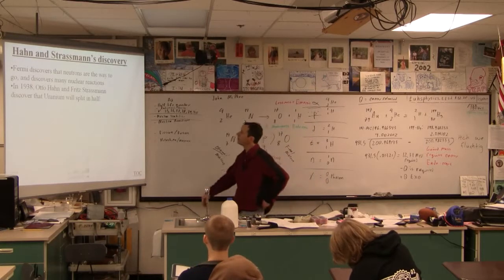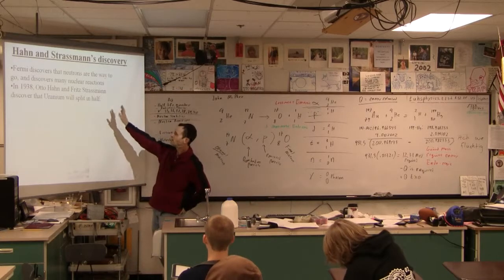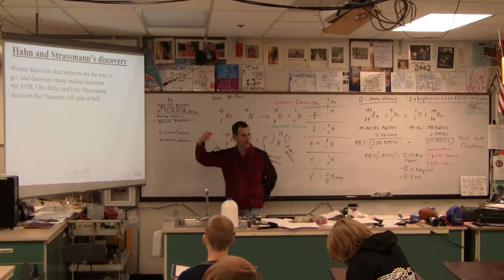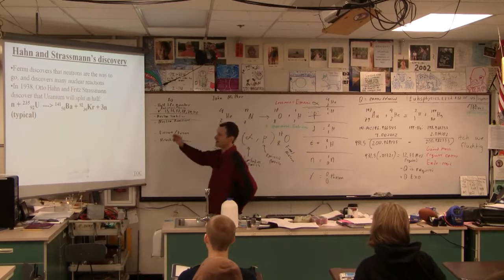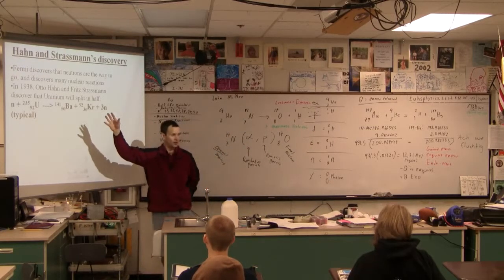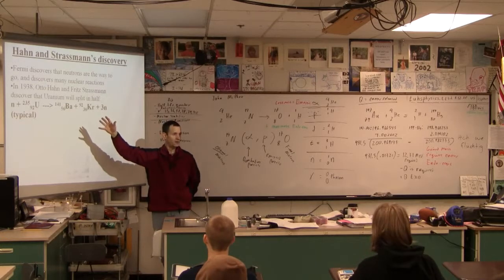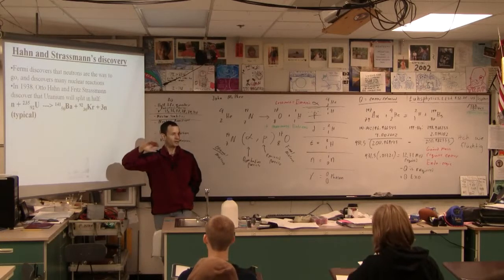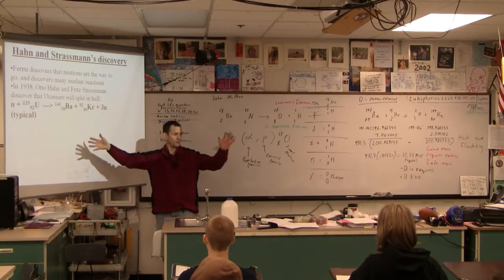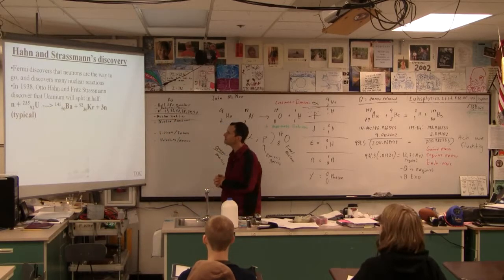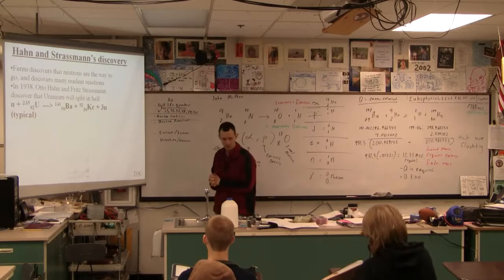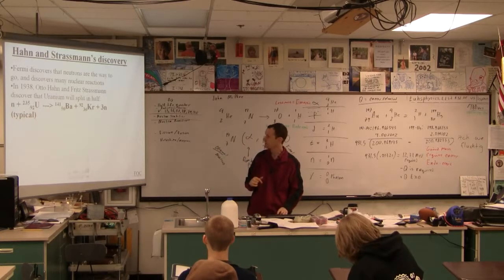Otto Hahn and Fritz Strassmann discover that they can split uranium in half. And this is just a typical reaction. This is not every single reaction that goes on in a nuclear fission reaction. In fact, it's so chaotic that there's hundreds of different reactions that go on. In fact, there's series of reactions that go on. The thing that's interesting, there are two things that are interesting about this reaction.